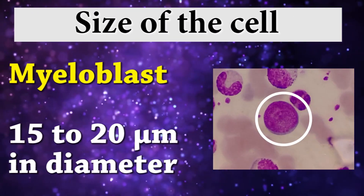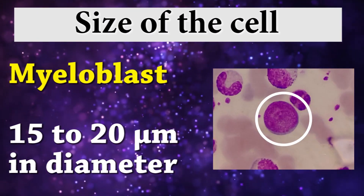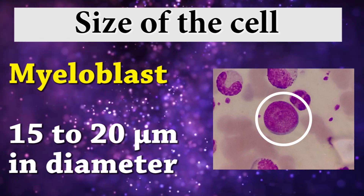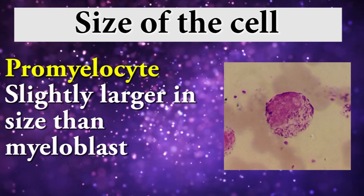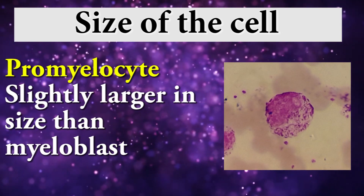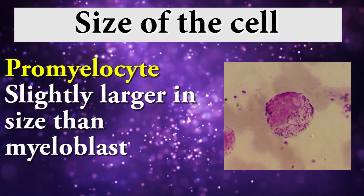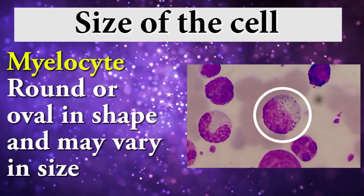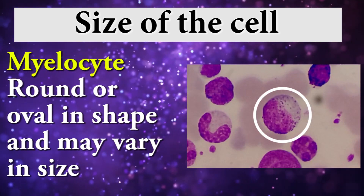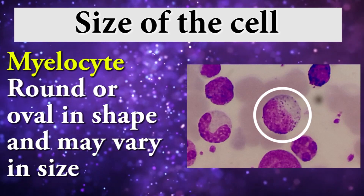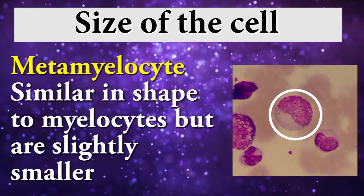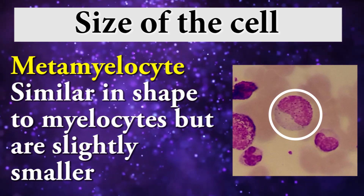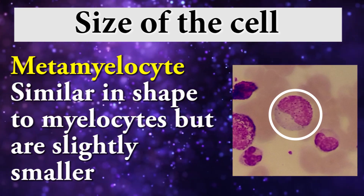Second one is size of the cell. Myeloblast: 15 to 20 micrometres in diameter. Promyelocyte: slightly larger in size than myeloblast. Myelocyte: round or oval in shape and may vary in size. Metamyelocyte: similar in shape to myelocyte but slightly smaller.